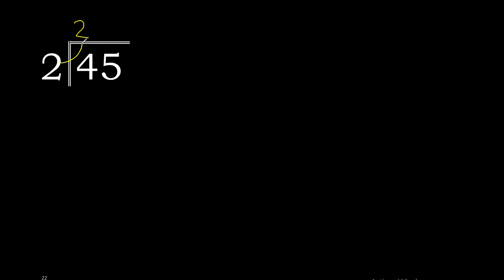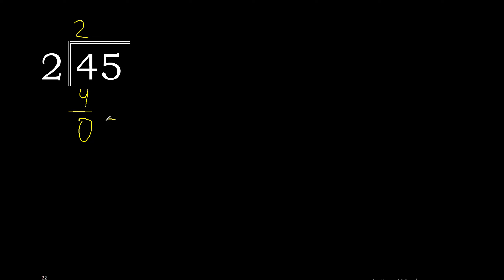2 multiplied by 2 is 4. 4 minus 4 is 0. Bring down 5. Eliminate the 0.